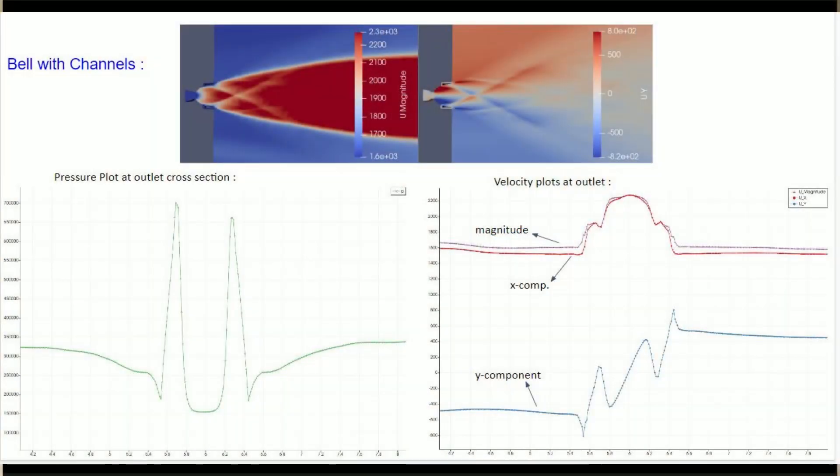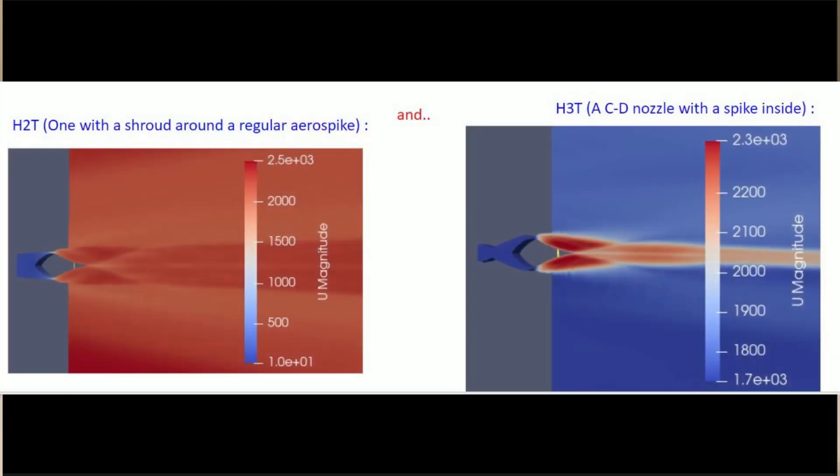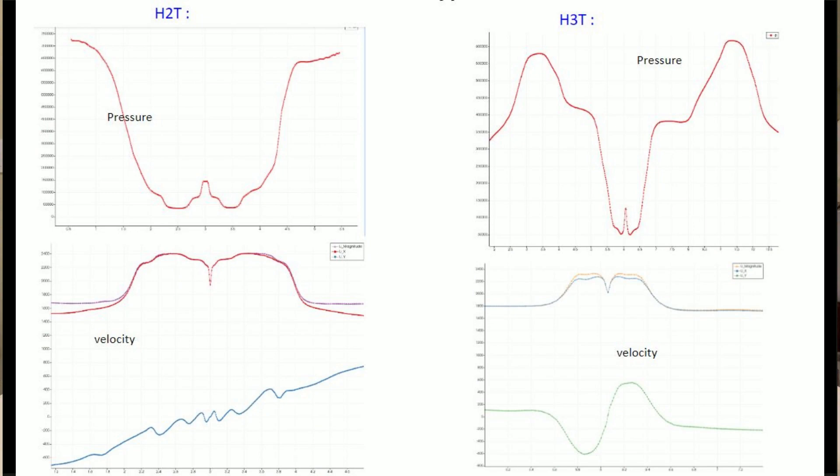Analyzing some of the graphs I created from this data, I was able to determine that the cosine loss cancellation theory was working, as the nozzles that utilized it showed special patterns in velocity and pressure graphs, which show a barrier being formed around the main plume, with most of the velocity inside the main plume being directed straight back. The other Bell Aerospike hybrid nozzles I designed also showed to be effective in containing the plume expansion.